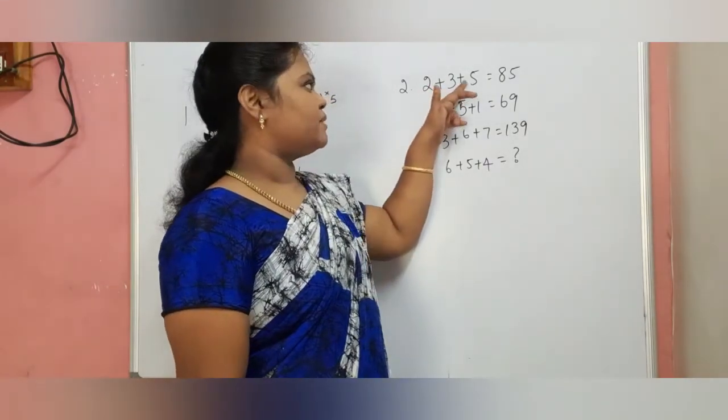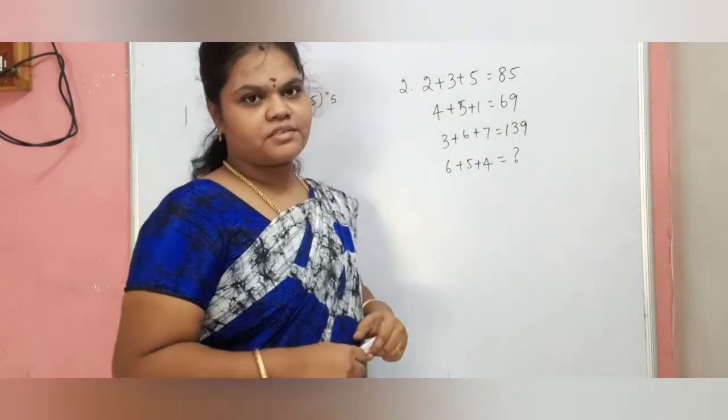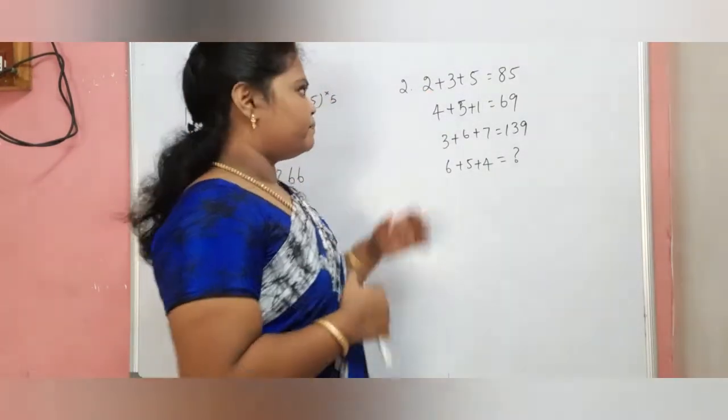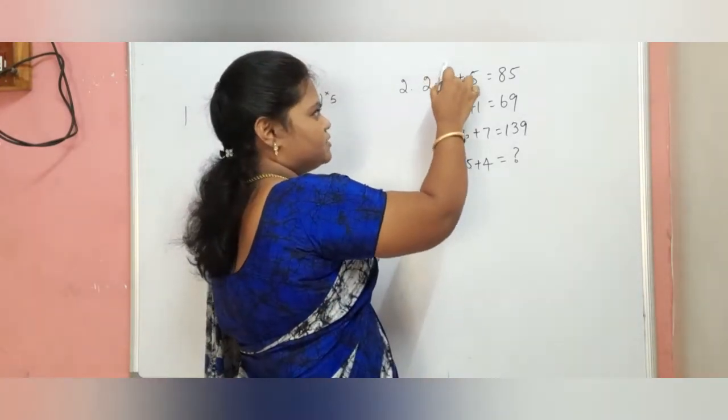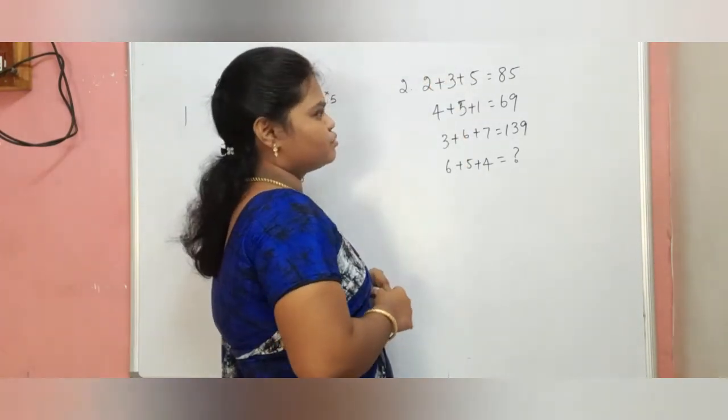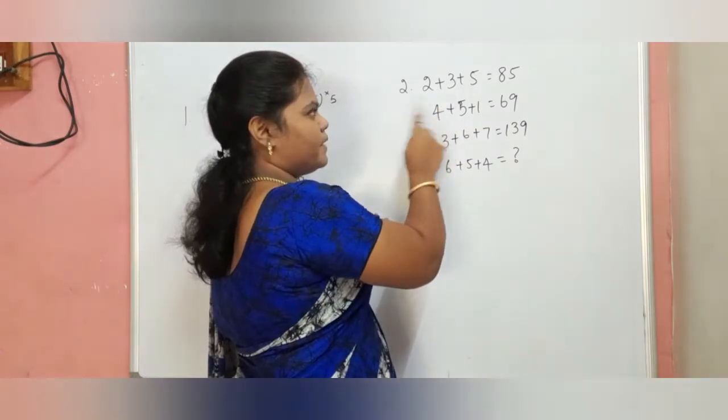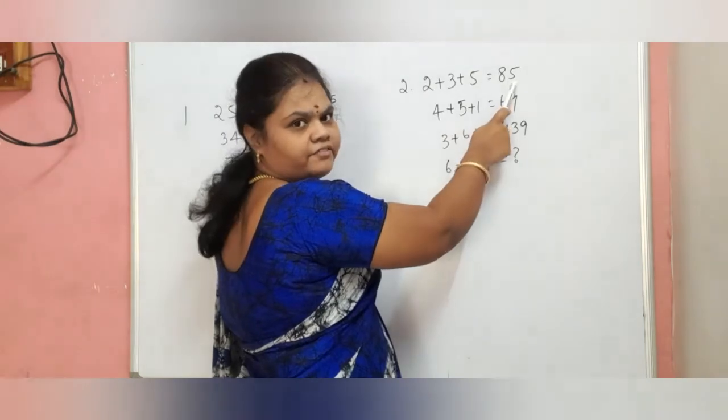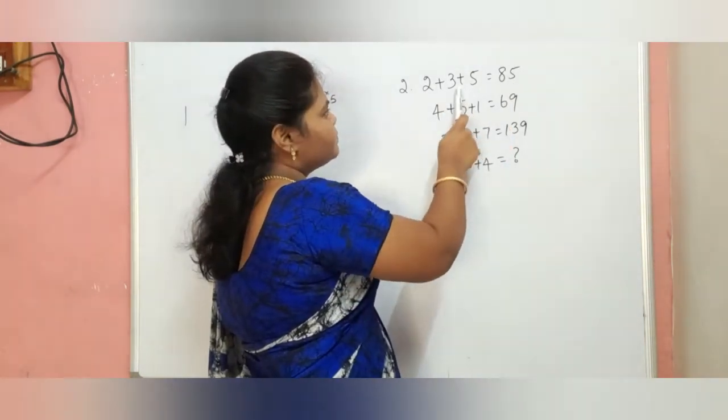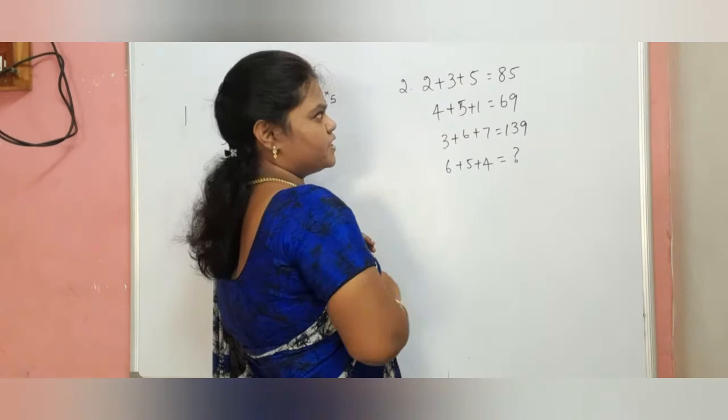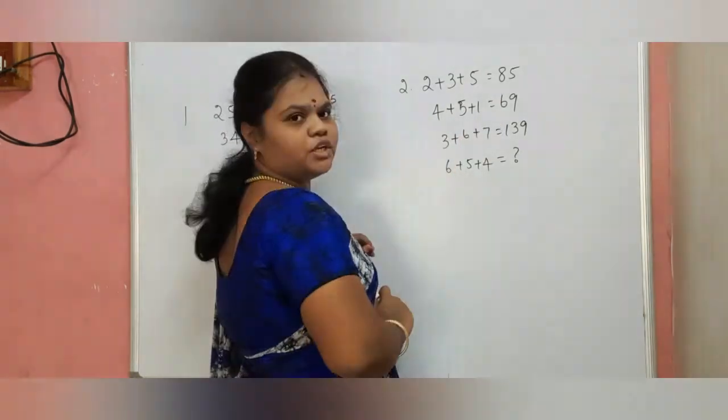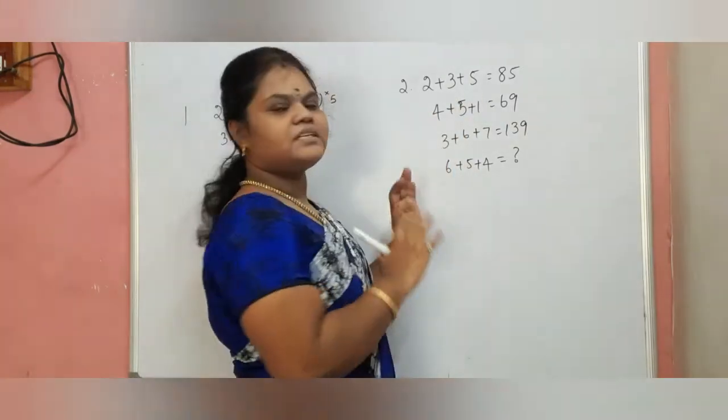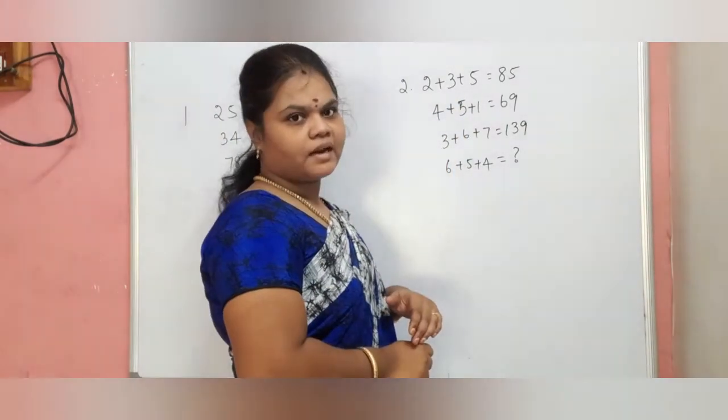Here is 2 plus 3 plus 5 is equal to 80. Here is the logic.